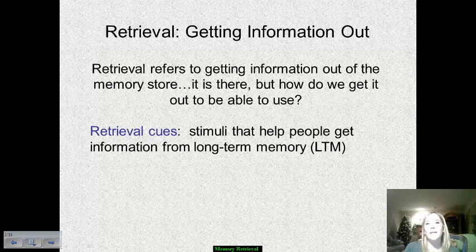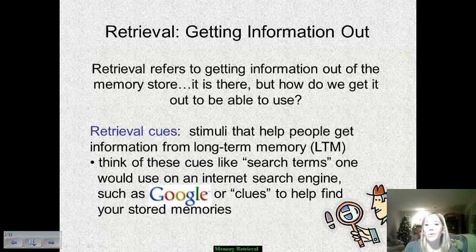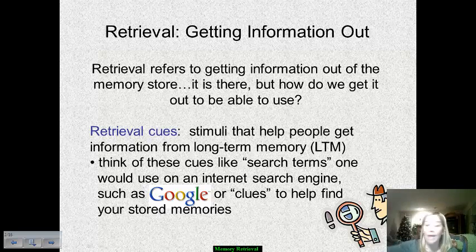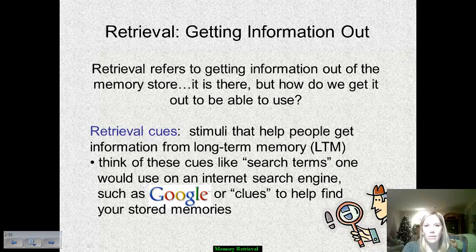Retrieval cues are stimuli that help us get information out of our long-term memory. Think of these like search items when you type something into Google. When you're using an internet search engine, it uses those as clues to help it sort through all of the entries and pieces of information stored in that search engine to find the right one that you would prefer.